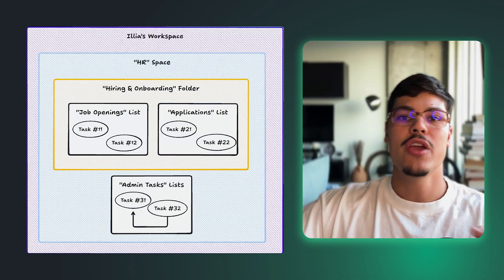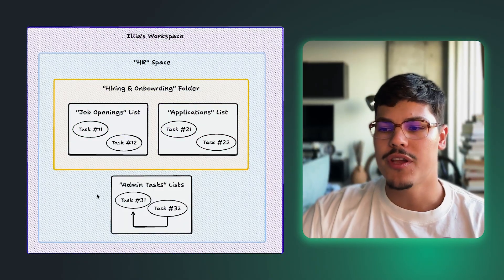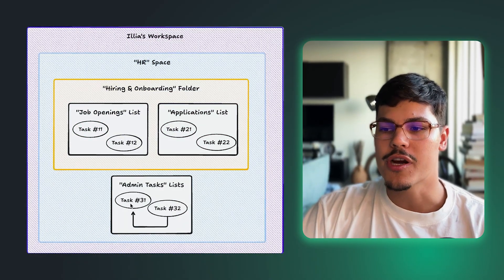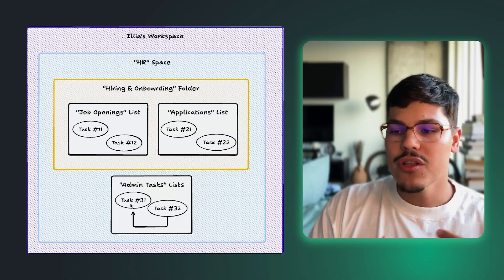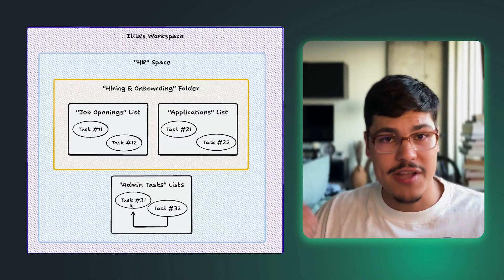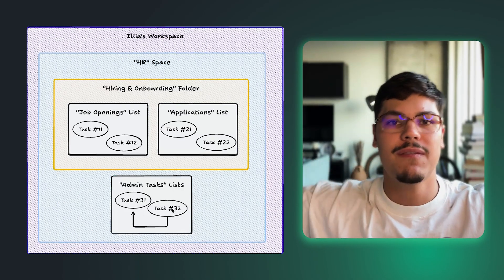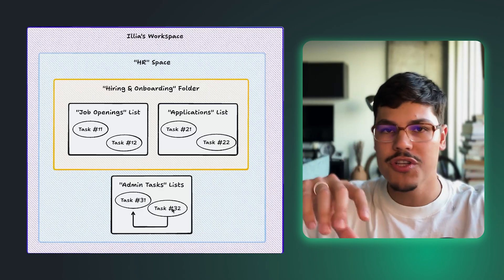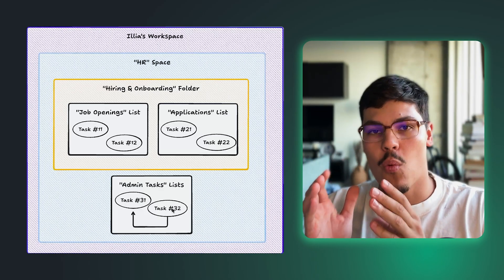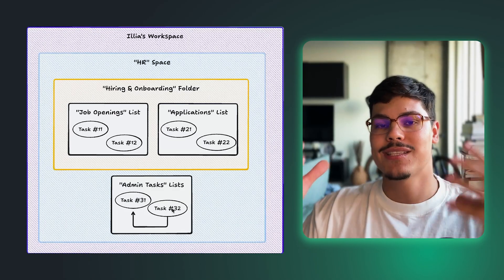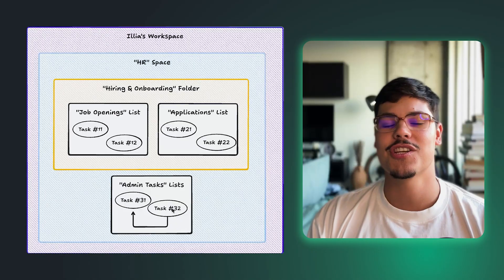An important note: you can create this dependency not only for tasks from the same list, but for tasks from anywhere inside your workspace. Those tasks can be located inside different spaces, different folders, or even different lists — and you can still create the waiting on and blocking relationship. Just be mindful of that whenever you're using this functionality.